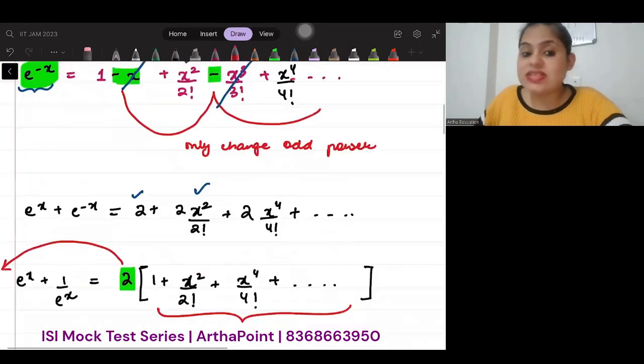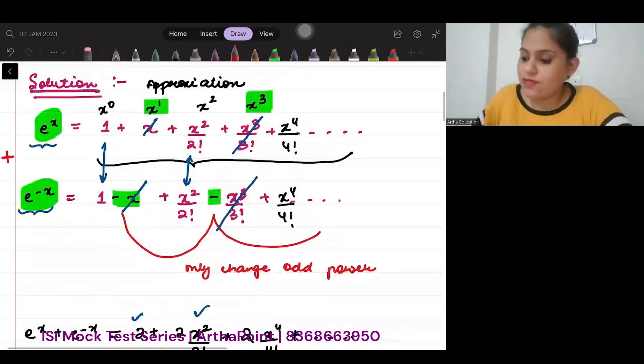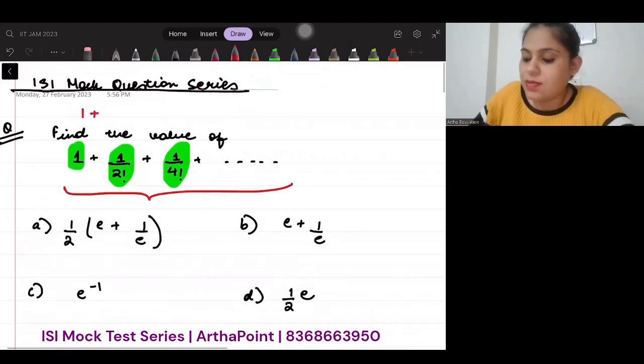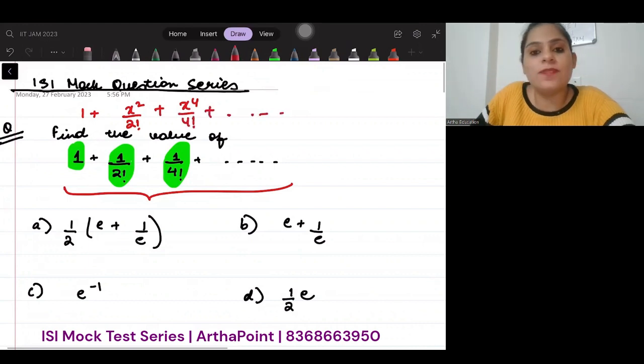Now, you may think that this has started looking very familiar to what I have asked. What we have got is in the form of x. So, I have got 1 plus x squared by 2 factorial plus x to the power 4 by 4 factorial and all. Now, I have been able to derive this that this is half e to the power x plus 1 by e to the power x.